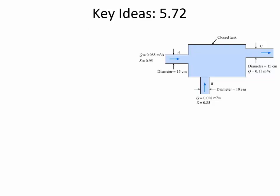Let me dim the lights so you can see some of these key ideas in problem 572. Here's the picture from that problem, and what it shows is that there is flow going in and flow going out of a closed tank where there's no capacity for storage. Any questions related to the schedule?